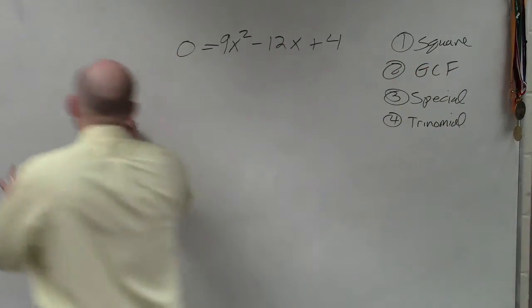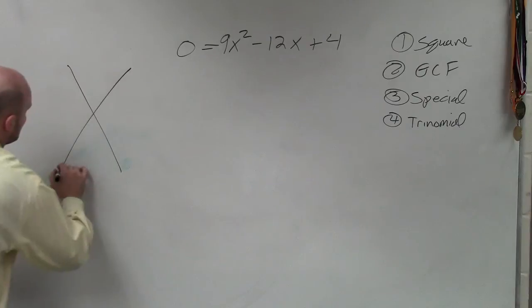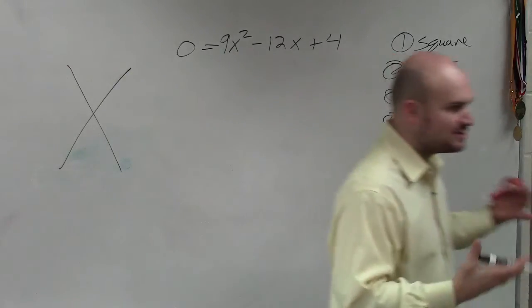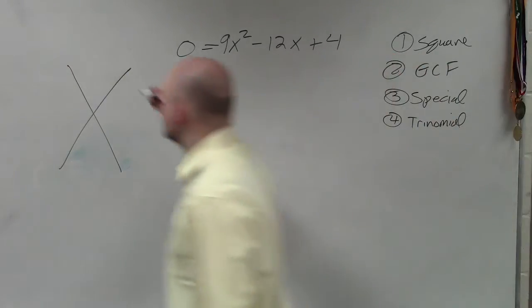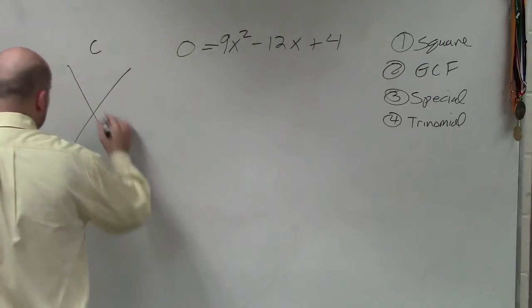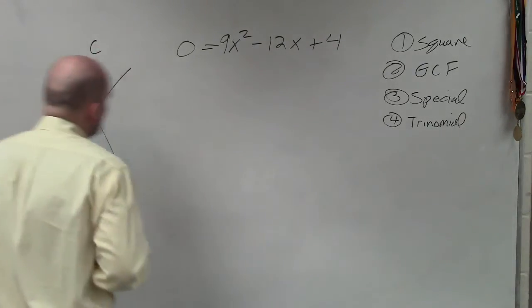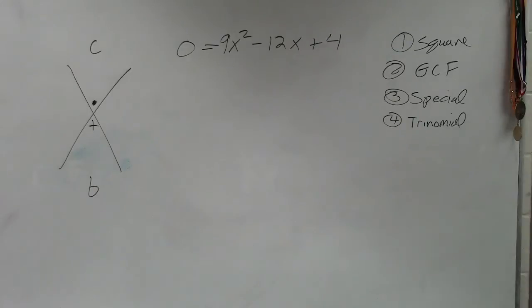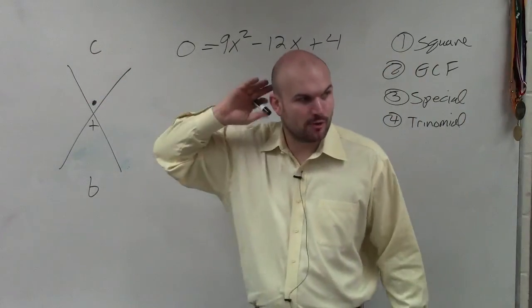And if you guys remember, the factoring technique that we went over last class period was this x-diamond method. And I told you guys to write c, b, multiplication, and addition. Everybody should have that on their previous notes. If you weren't here or you didn't write them down, then you'd want to make sure you rewrote them down so you can remember that. Because if you can't do these problems in your head, you're going to want to have this memorized to help you out.